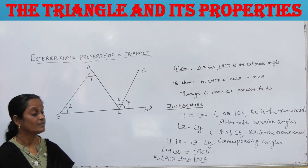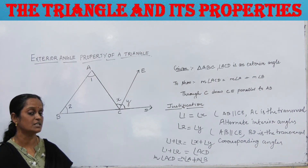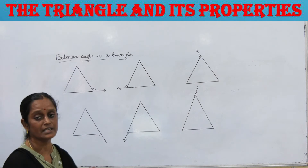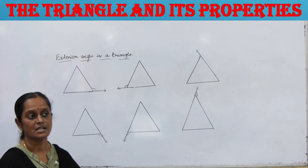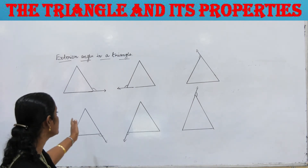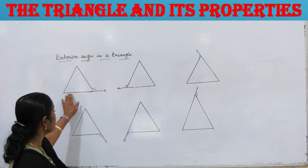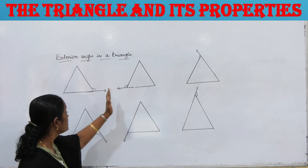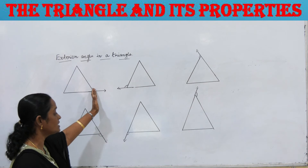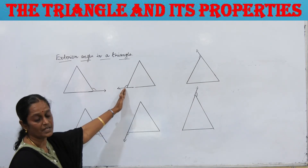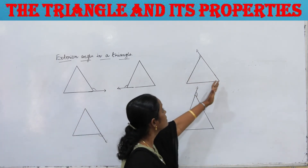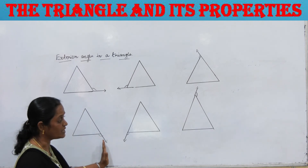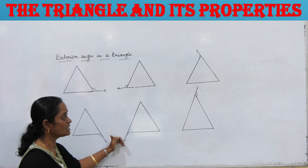In a triangle, the measure of an exterior angle is equal to the sum of the measures of the interior opposite angles. Exterior angles can be formed for a triangle in 6 different ways. There are 3 interior angles and 3 exterior angles. Each side can be extended in either direction — to the right or to the left — giving 6 possible exterior angles.